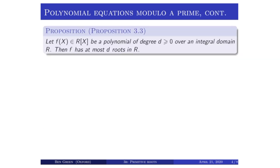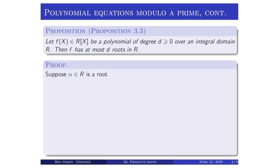Let's state a general result about polynomial equations. We're really interested in this result in z mod p z, but we'll state and prove it in an arbitrary integral domain R, because the proof is just the same. Let f of x be in the polynomial ring R of x of some integral domain R. Suppose f is a polynomial of degree d. The proposition is that f has at most d distinct roots in R — not talking about multiplicity here.